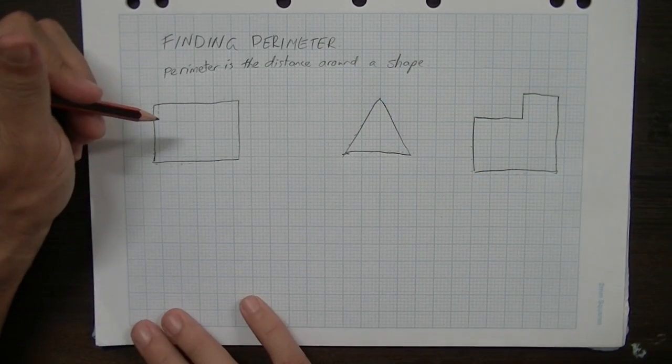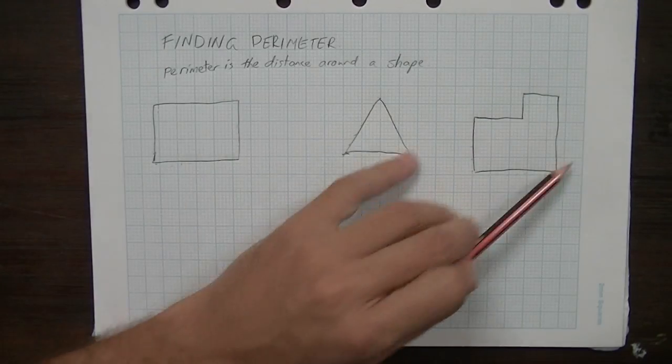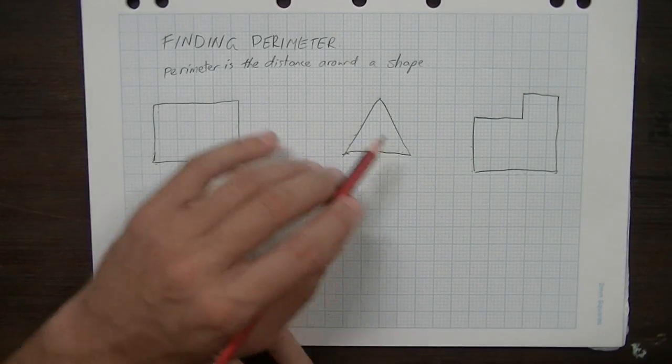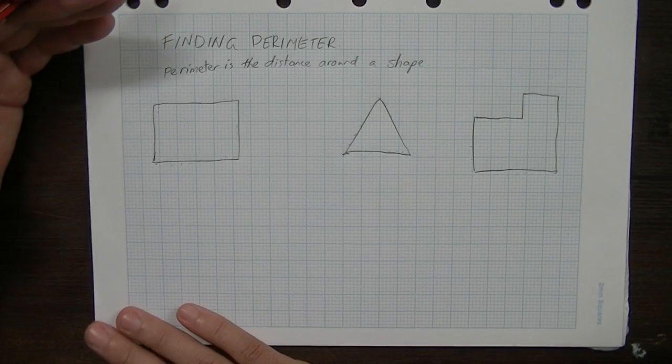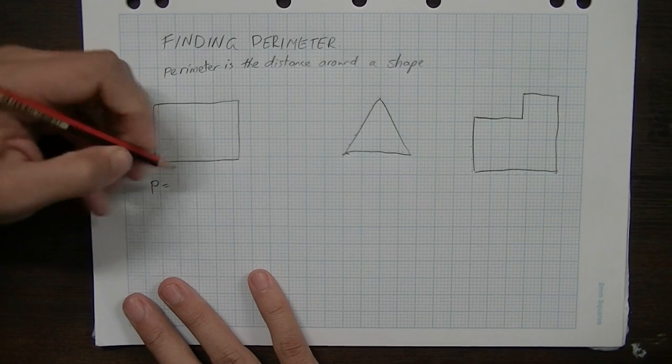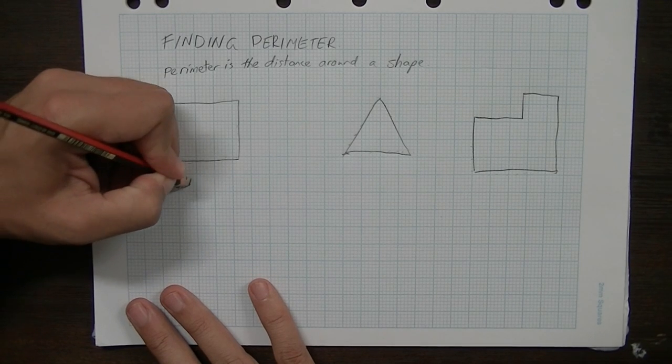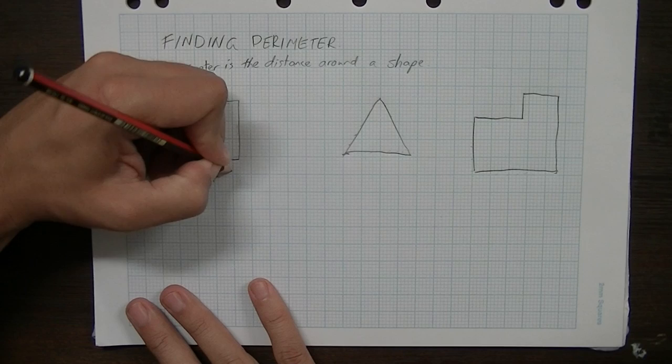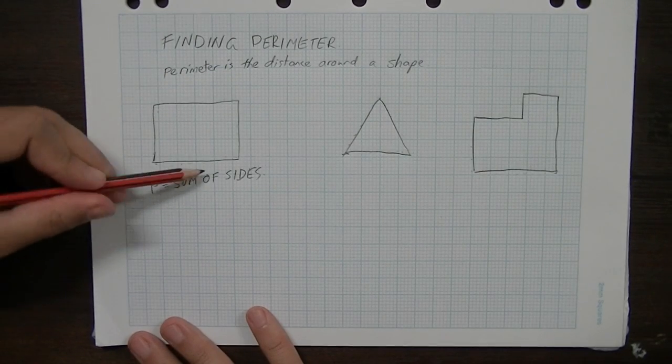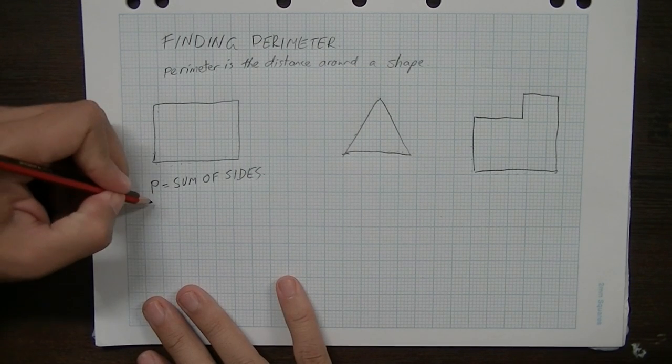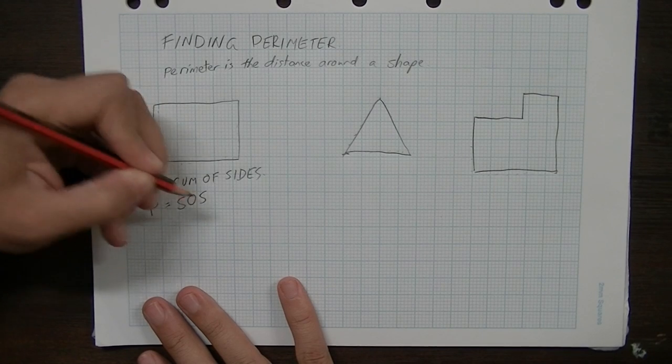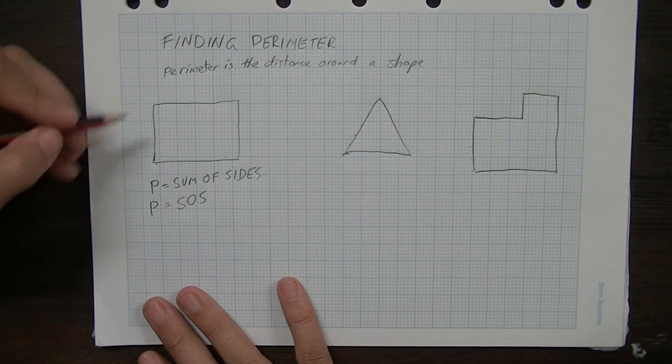Okay, so that's what perimeter is. Now for any shape at all, any two-dimensional shape, we only have one, or I'm only going to teach you one rule for perimeter, and that rule is perimeter equals the sum of sides. Now that just means all of the sides added up together. We'll shorten that, make it nice and easy for ourselves. Perimeter equals SOS.